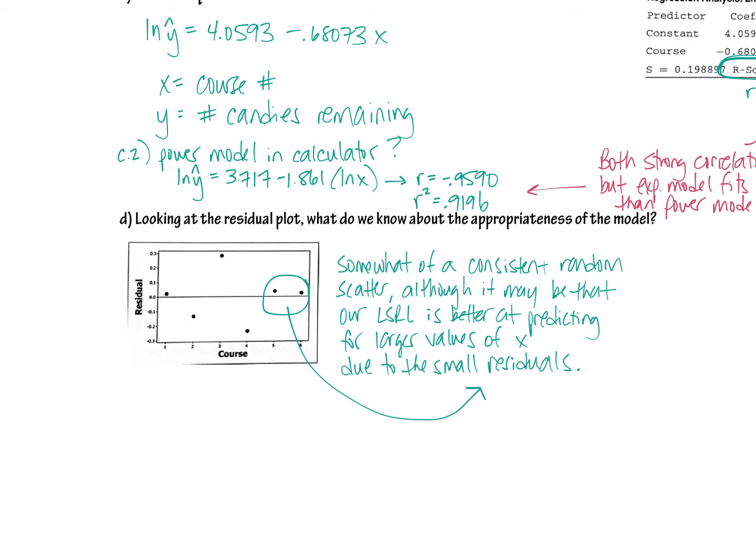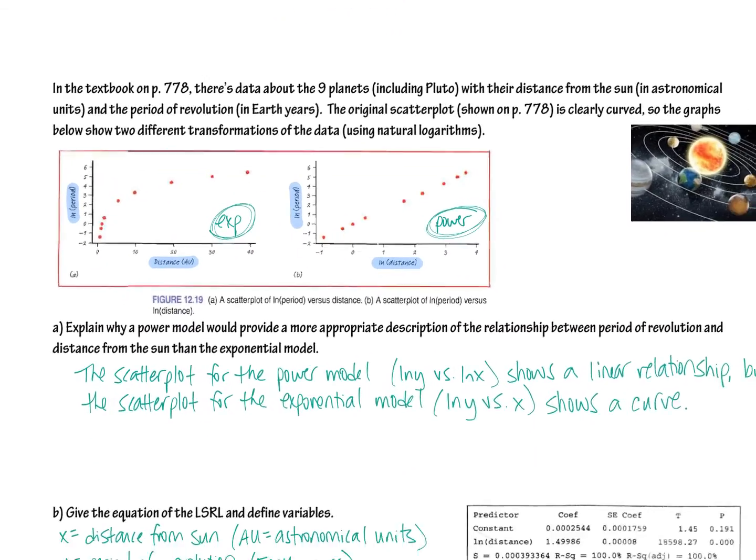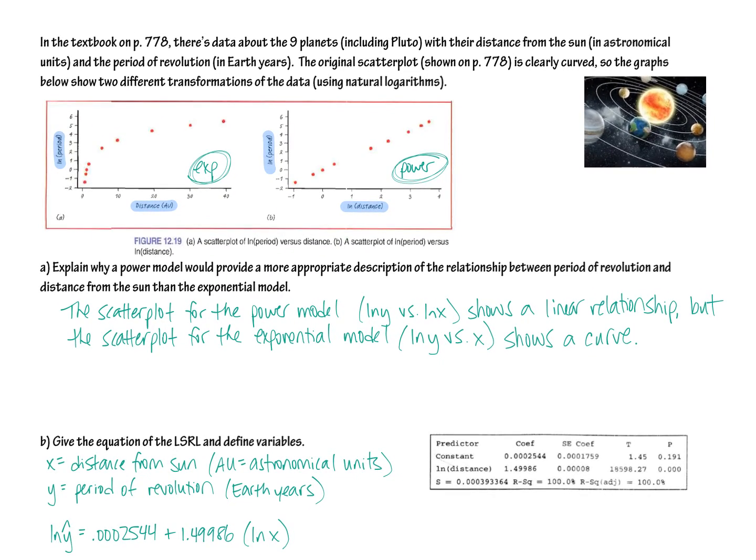All right, moving on to the second page, what we are going to do here is we're going to look at some data about the nine planets, including Pluto. For those of you scientists out there, I know that's controversial right now, but we're just going to go with it because it's in our book. We have data on the distance from the sun and the period of revolution. What you need to look at really closely here is make sure that you're reading the axes really carefully. This is regular distance versus natural log of period. That makes it an exponential model. Remember, by definition, if you use the regular x value with the natural log of the y value, that is called an exponential model. In this one, we have natural logged both the x and the y. That, by definition, is a power model.